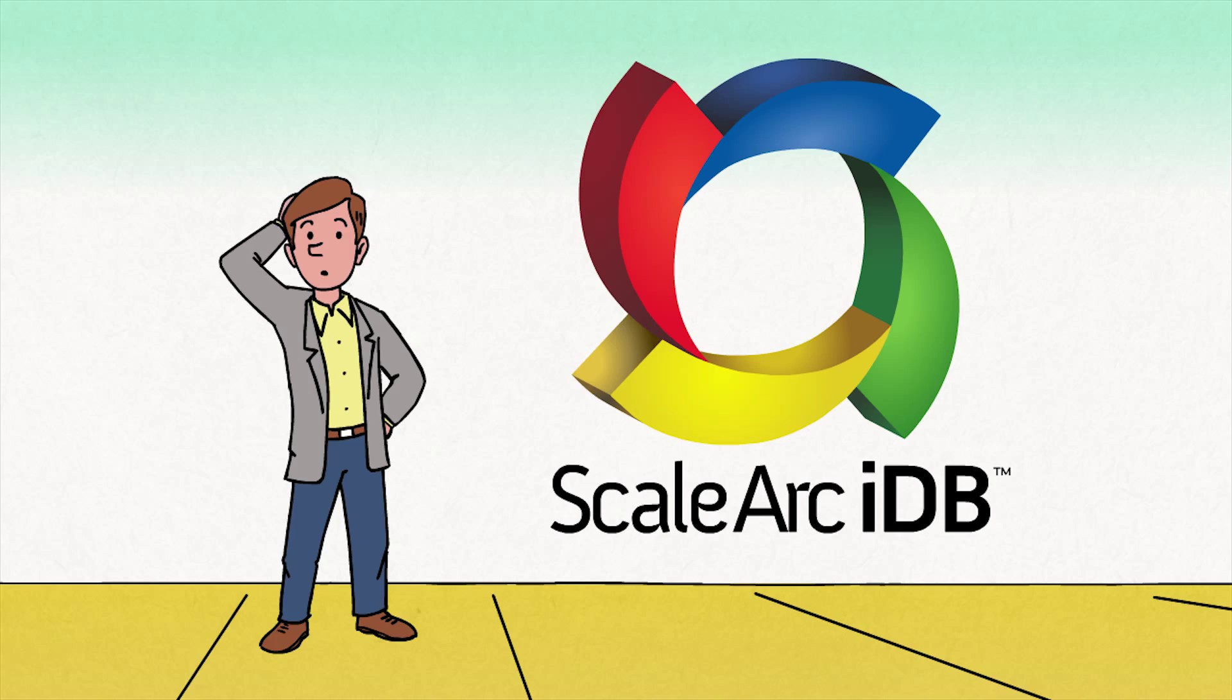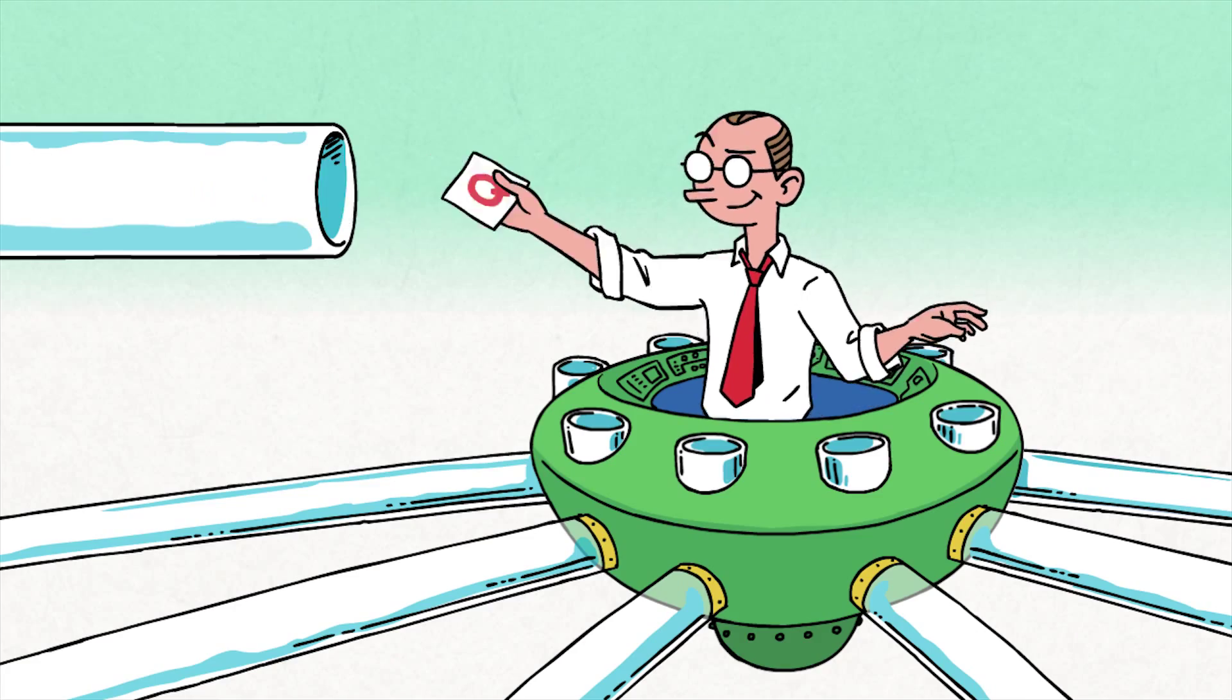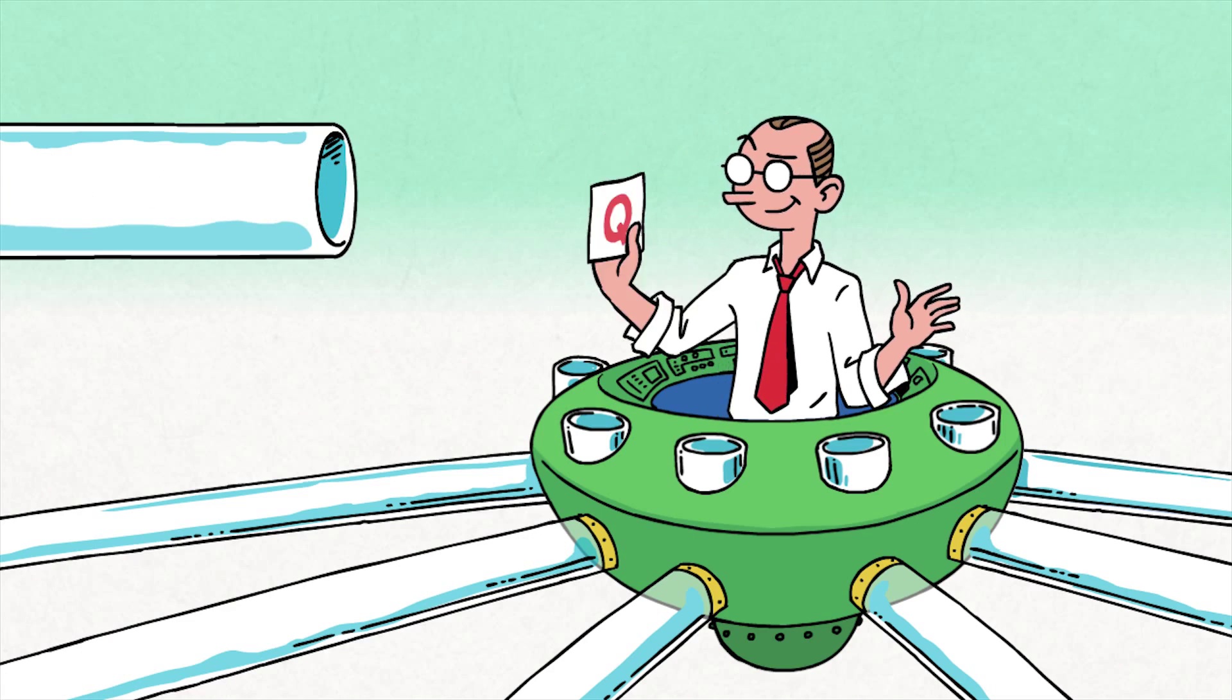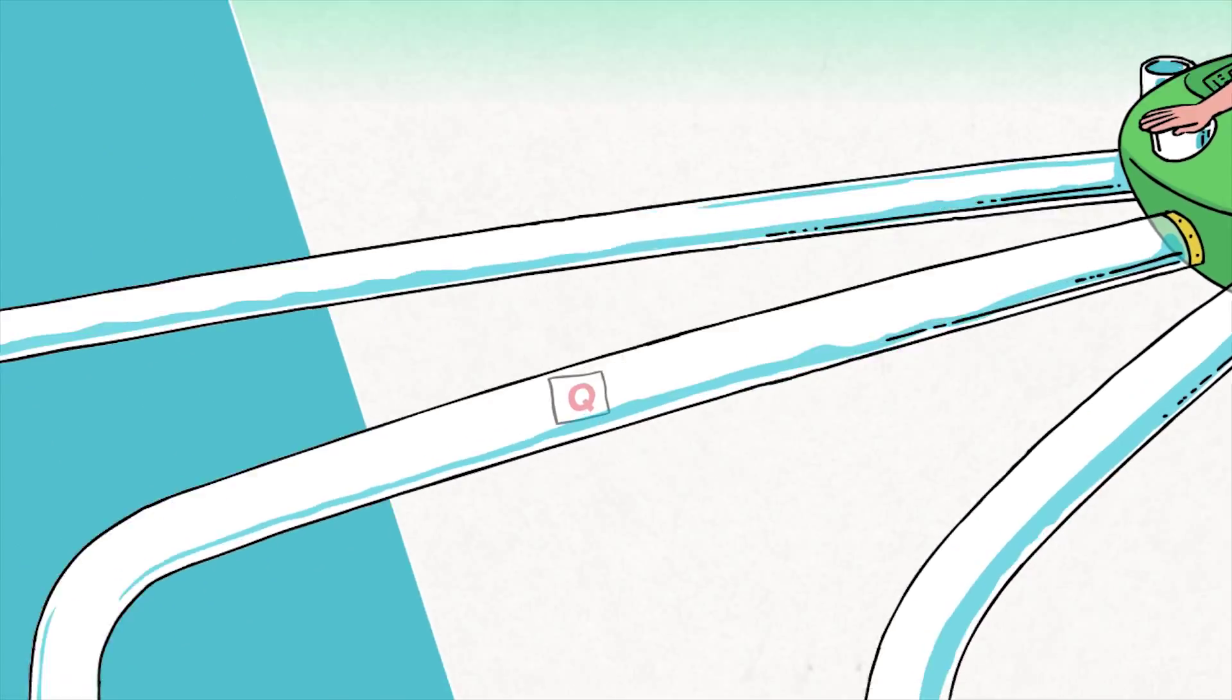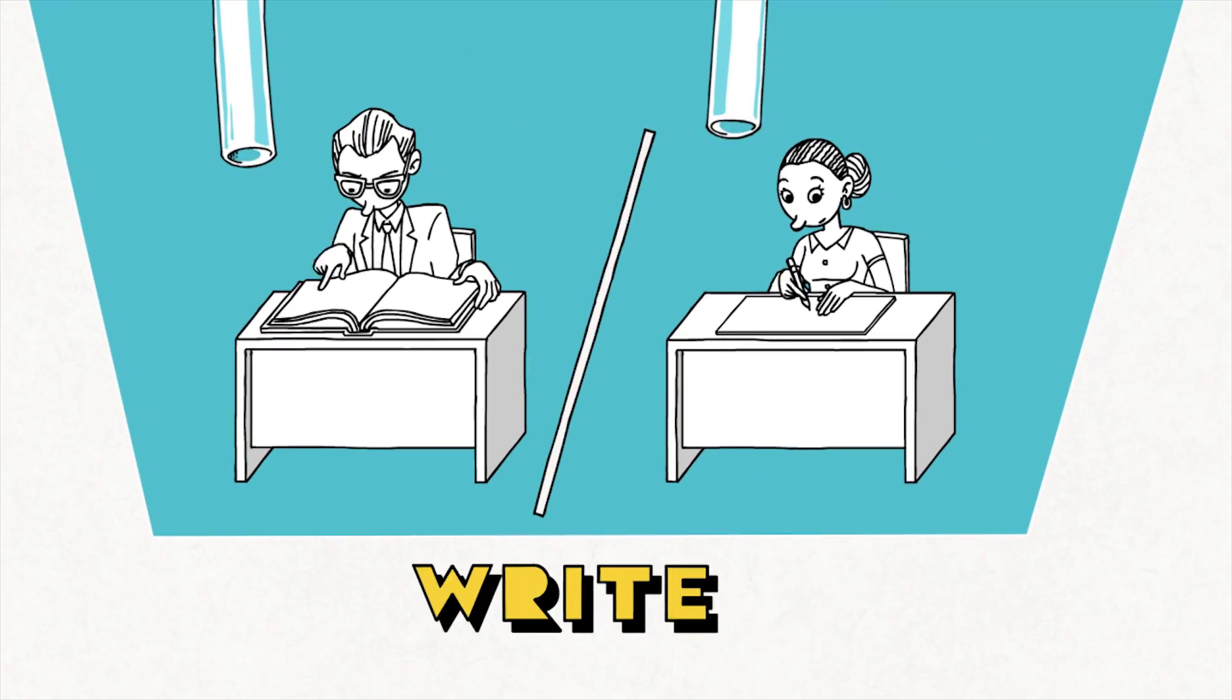How does our software work? Imagine each of your database clusters is an office worker. ScaleArc IDB is a smart manager sitting at the top of the pipeline. He steers queries to where they can be answered most quickly and directs the flow so that efficiency is maximized.